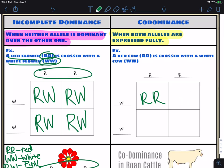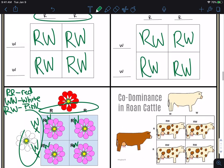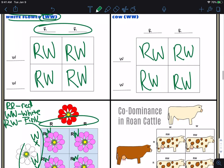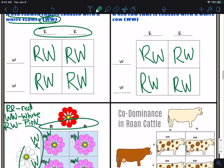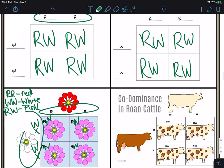You get a red cow and a white cow. And what you end up doing is you get the same results. You get RW, RW. And within that, you then get the exact same thing, the exact same results.